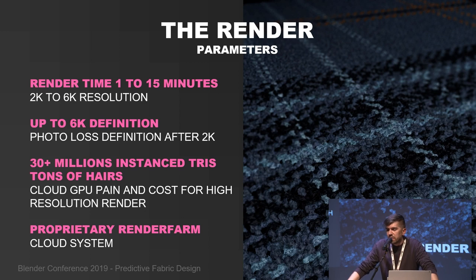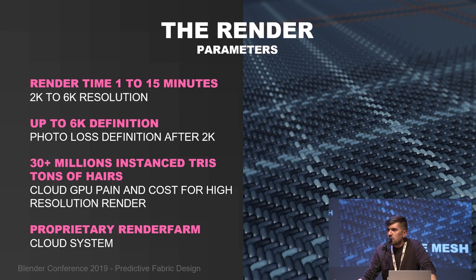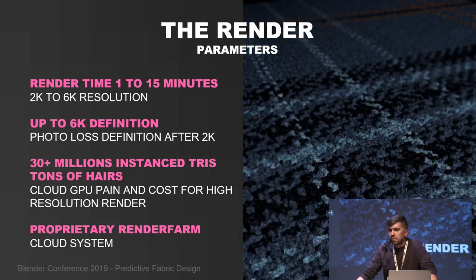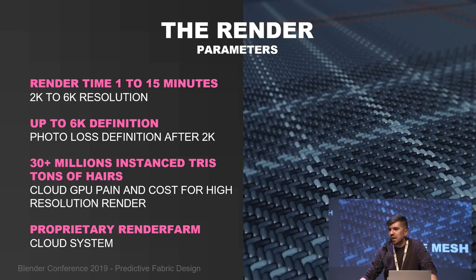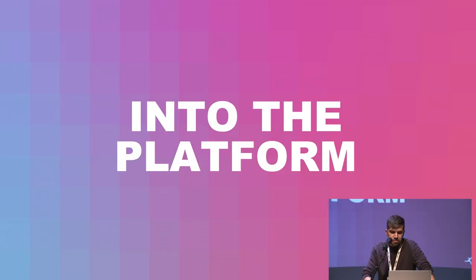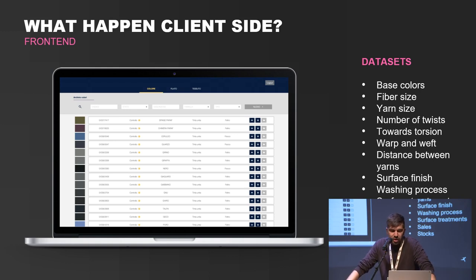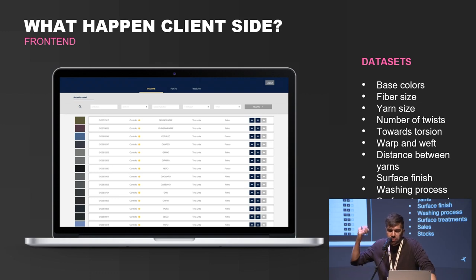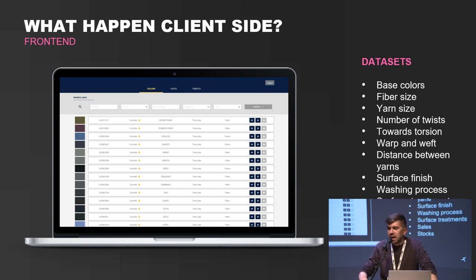Not every render is the same — when I have a lot of fur inside my fabric, rendering time is very expensive. Now jumping inside the platform as the customer sees it: through a graphical front end, our customers feed the repository of colors, yarns, and all the data visible on the right. These can be managed by the platform and define variables for the final fabric — fiber size, yarn, number of twists — so every rendering request is unique.